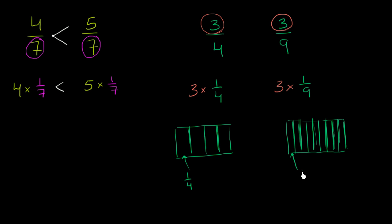So when you see here, and you might have already realized this, if you divide something into four equal sections, each section is going to be bigger than if you divide it into nine equal sections. A ninth is smaller than a fourth. So 3/9 is going to be smaller than 3/4.